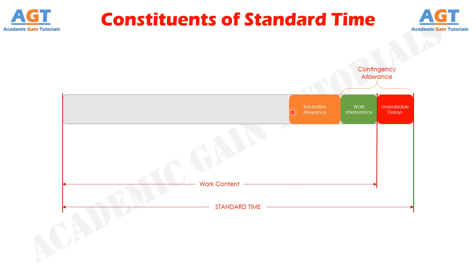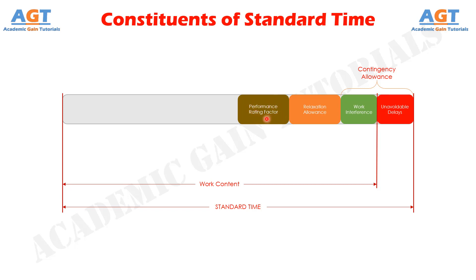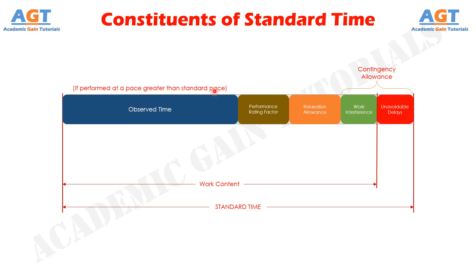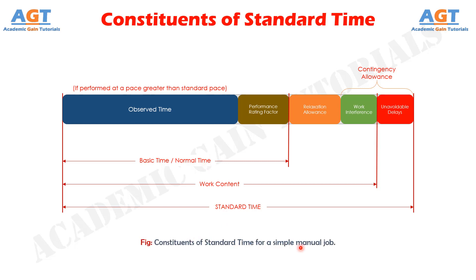After that, there will be allowances for adding the performance rating factor to the observed time. Finally, after taking all that into account, the time we get is the observed time, only if performed at a pace greater than standard pace. This observed time, along with the performance rating factor and some process allowances, together constitute the basic time. We could also call the basic time as the normal time. This is all the constituents that together make up the standard time for a simple manual job.